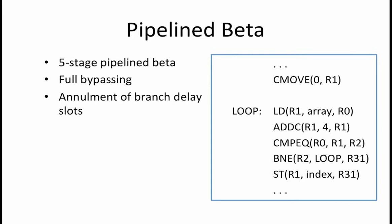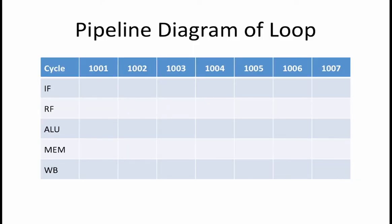In order to do this, we will create a pipeline diagram showing the execution of this program. A pipeline diagram demonstrates which instruction is currently being executed in each of the five pipeline stages. Our rows indicate the pipeline stage that the instruction is in. There are five pipeline stages. The first is IF, or instruction fetch, which fetches the next instruction from memory. The second is RF, or register file stage, which reads the source operands of the instruction.